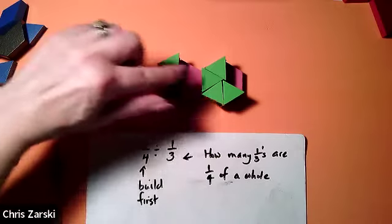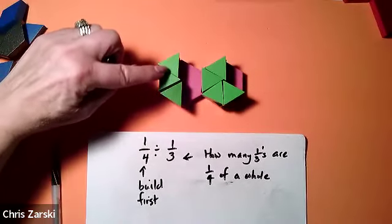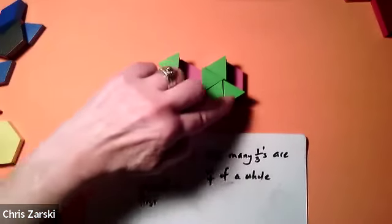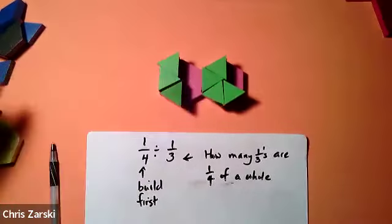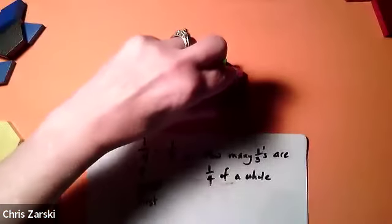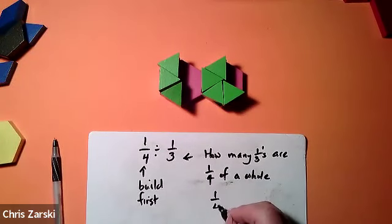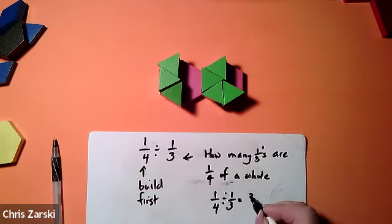Not even a whole one, just three quarters of it fits in. Here's your three quarters. You can see it being built. I can lay it on top. I only cover three quarters of it when I'm talking about a quarter. So one quarter divided by one third is equal to three quarters.